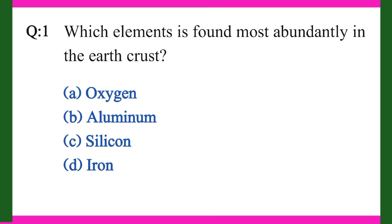Aslamu alaykum. Question one: Which element is found most abundantly in the earth's crust? A. Oxygen, B. Aluminum, C. Silicon, D. Iron. Right answer is A. Oxygen.